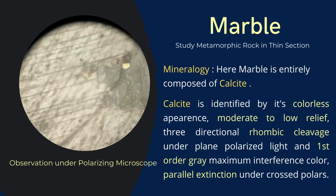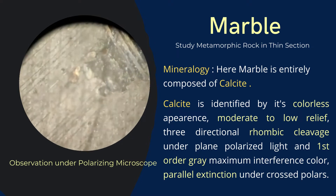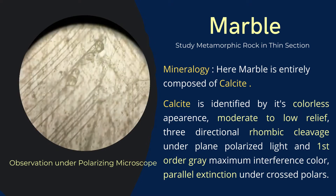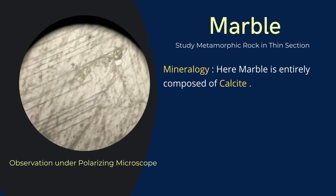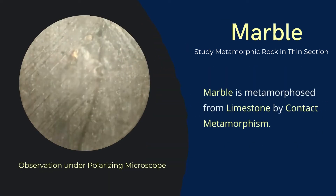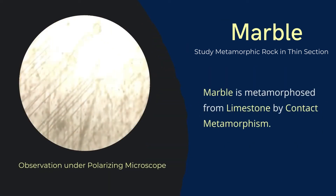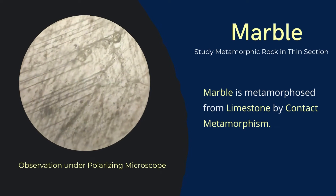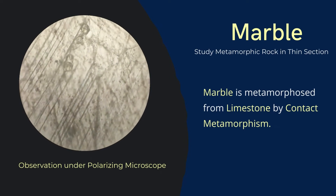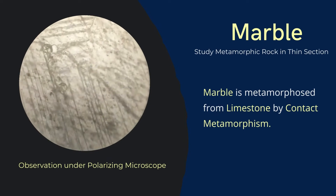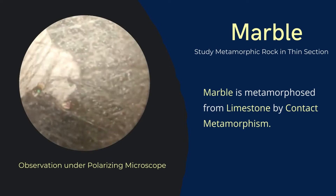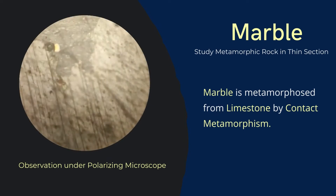Under crossed polarized light, calcite shows first-order gray maximum interference color and parallel extinction. The non-foliated structure, granoblastic texture, and mineral composition confirm that the rock is marble, which is metamorphosed from limestone by contact metamorphism.